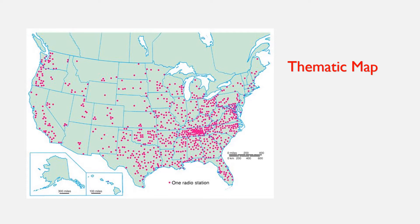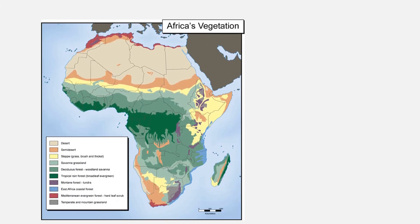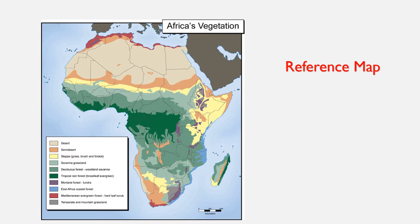Now I'm going to throw you a curve ball. There are different ways to show data. What type of thematic map is this — how is it showing data? It's showing it through dots. Every dot represents one radio station. This is called a dot distribution map. This one might be a little tricky — reference or thematic? It's showing Africa's vegetation. It's reference.